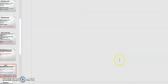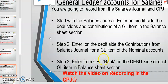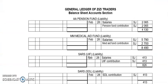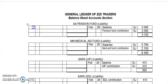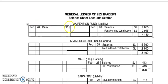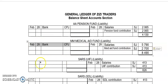Now step three — I'm going to do that quickly. Enter from the CPJ: you must enter 'bank' on the debit side of each general ledger item of the balance sheet section. We're going back to the balance sheet. What's happening is we're recording the payment of those liabilities. Whatever we were owing, we're now going to record the payments. So on the debit side, we write February 28th, 'bank,' CPJ, and enter the amounts from the CPJ.